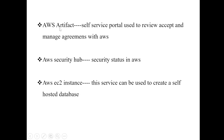AWS Security Hub shows the security status within AWS. AWS EC2 instance is a most famous one — it is used to create self-hosted databases. For example, if you want to host a static database, you will use an EC2 instance.